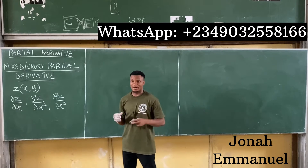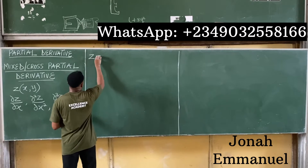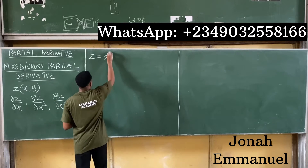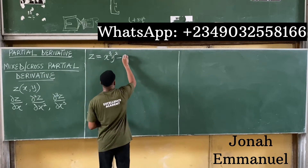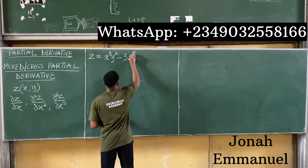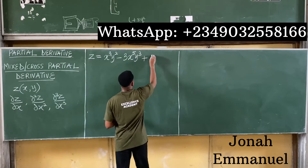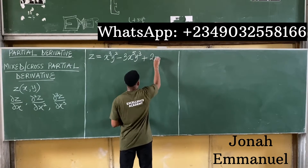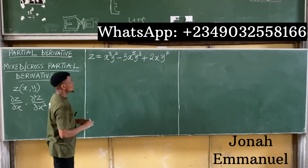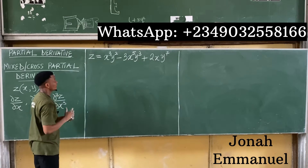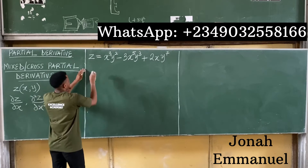Let me take an example to show you how this works. Let's say z equals x cubed y squared minus 3x to the power 5 times y to the power 3, plus 2x times y to the power 7. We'll use this to demonstrate mixed or cross partial derivatives.